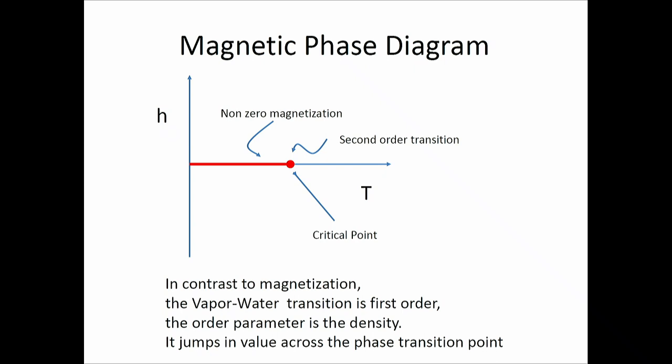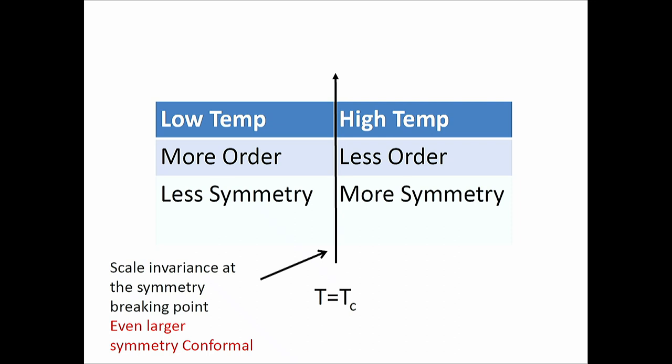Another way of looking at it is a magnetic system. Here H plays the role of pressure — the external field — and I have non-zero magnetization below the critical temperature, with a second-order transition at the critical line. The general picture: at low temperature, I have more order and less symmetry; at high temperature, less order and more symmetry. This is usually called an order-disorder transition.